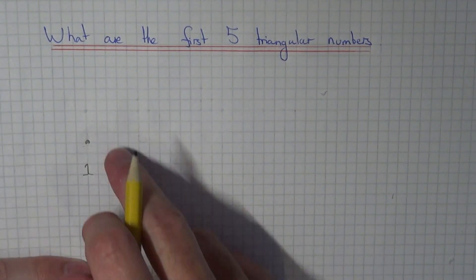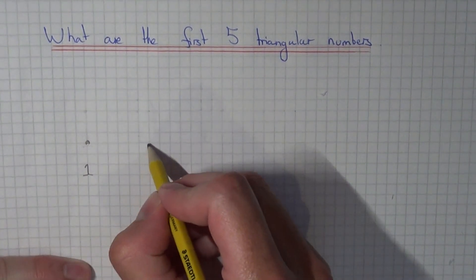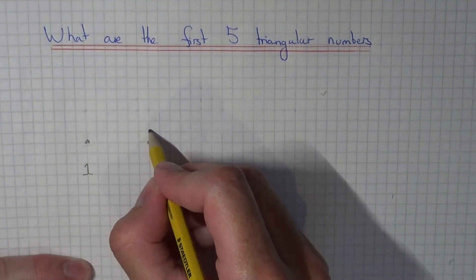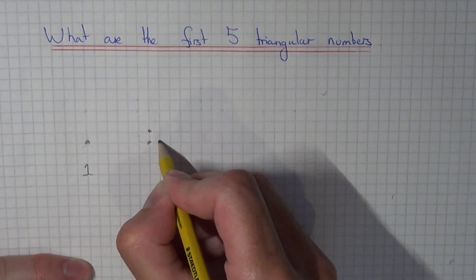To get your next triangular number, copy down what you've had before, so that was just one dot. And what we need to do now is just do a diagonal row of dots onto the one that we've just done.